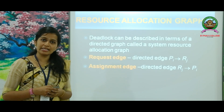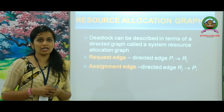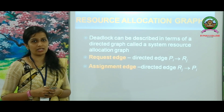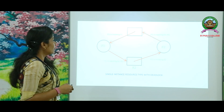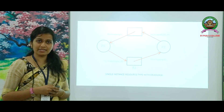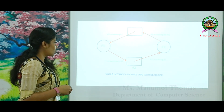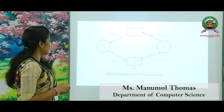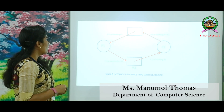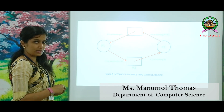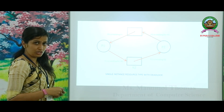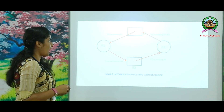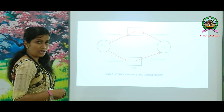Deadlock can be described in terms of a directed graph called a resource allocation graph. Here we have an example of a resource allocation graph with deadlock. We will be having 2 processes, P1 and P2, and 2 resources, R1 and R2.